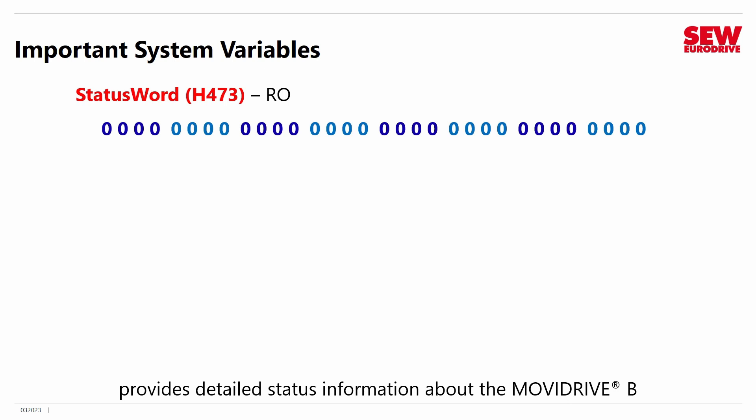This location provides detailed status information about the MoviDrive B. You can know practically every single thing that's happening in the VFD just by reading this one memory location. Let's look at some of the pieces of information these bits tell us. Every single bit is like a switch — if it's on or off, it tells you some facet of the VFD. For example, here's our first signal: it's called NOT-FAULT. That slash in front of it means it's an inverted signal. Now before I talk about what NOT-FAULT means, I need to remind you how bits are numbered.